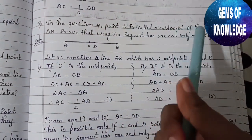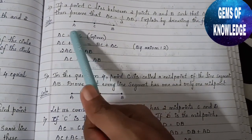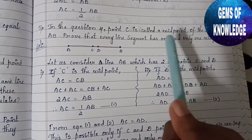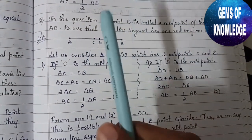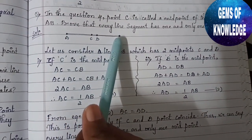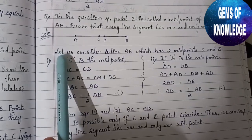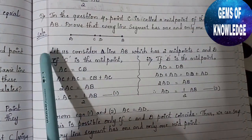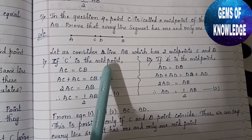Moving to the next question: point C is called the midpoint of line segment AB. Prove that every line segment has one and only one midpoint. To prove this, we assume line segment AB has two midpoints, C and D, and then show this leads to a contradiction.